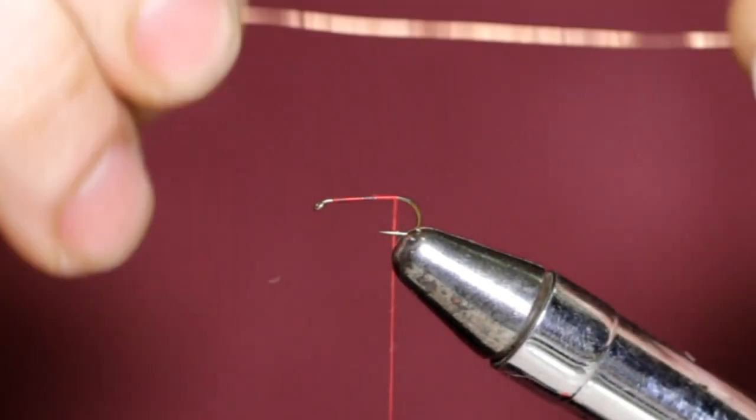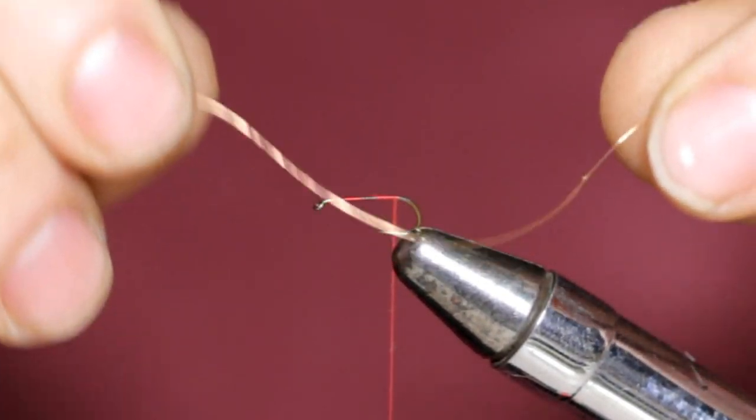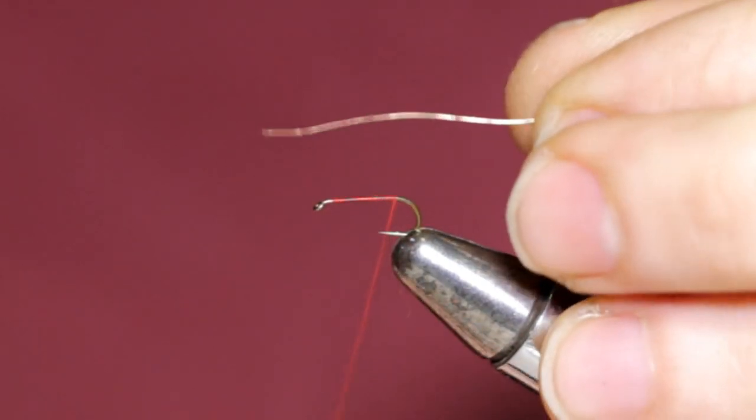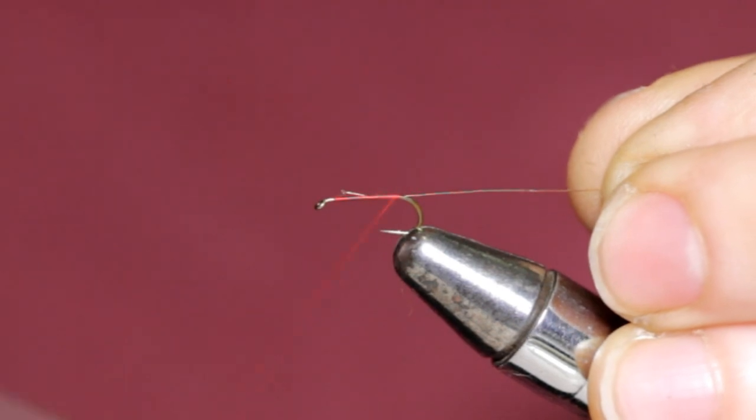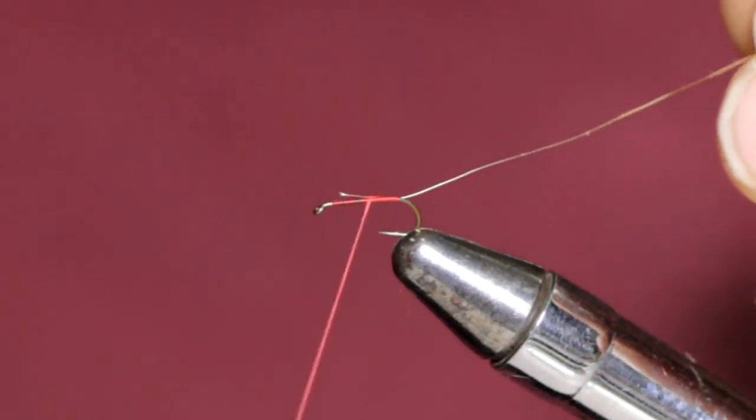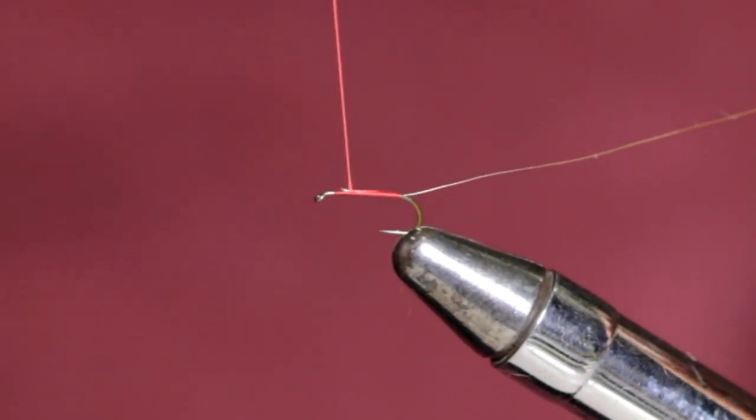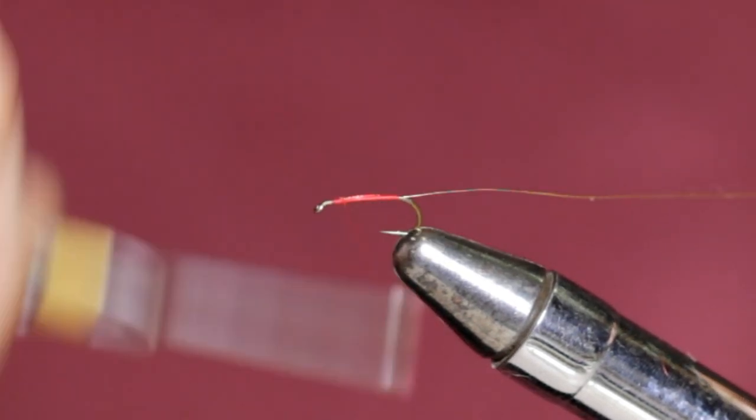Now it's time to tie in the rib, just a piece of copper wire in small. Tie this in at the back and bind it down. Then take the thread back to the rear of the hook again.